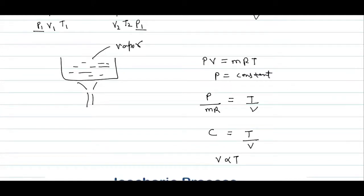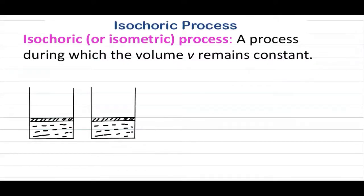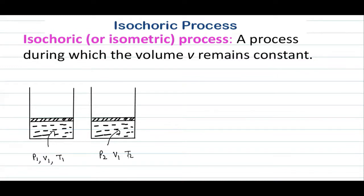Now let's understand the isochoric process. 'Choric' means volume, so a process during which the volume V remains constant is known as the isochoric process. Taking the piston and cylinder example again: the initial state has pressure P1, volume V1, and temperature T1. After the process, the final state has pressure P2, volume V1, and temperature T2. Since volume is V1 at both states, delta V equals zero — there is no change in volume.